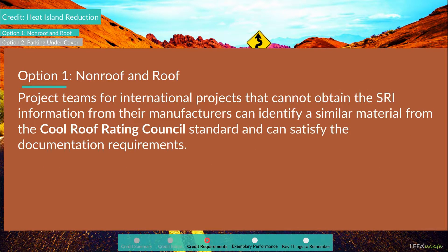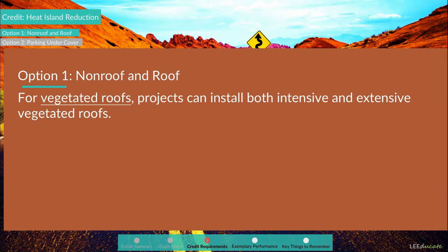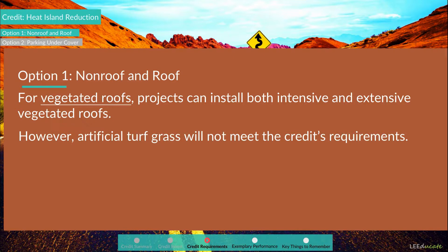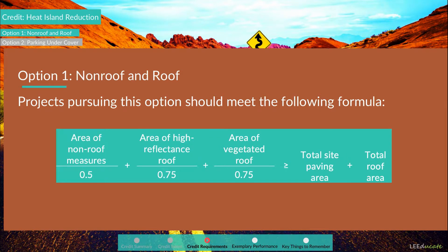For international projects that cannot obtain SRI information from manufacturers, teams can identify a similar material from the Cool Roof Rating Council standard to satisfy documentation requirements. For vegetated roofs, projects can install both intensive and extensive vegetated roofs; however, artificial turf grass will not meet the credit requirements. Under Option 1, the area of qualifying non-roof measures, high-reflectance roof, and vegetated roof will be on the left side of the equation.